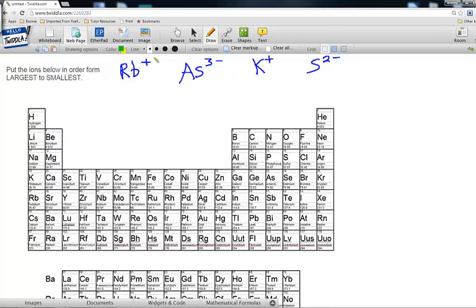Rb+ means that it's lost one electron. So if we start where Rb was, Rb is here. It's lost one electron, so that means it's gone back to become isoelectronic or have the electrons that krypton does. How many electrons does krypton have? It has 36. So Rb is going to have 36 electrons just like krypton.